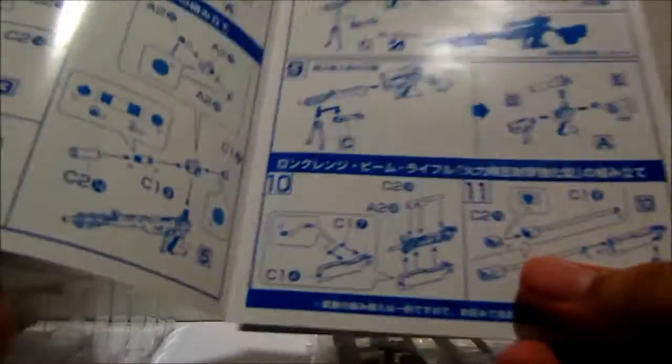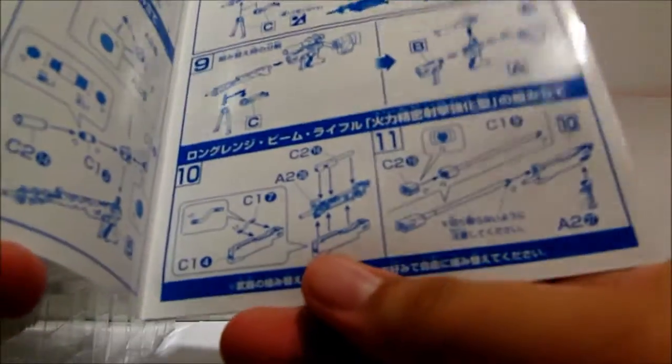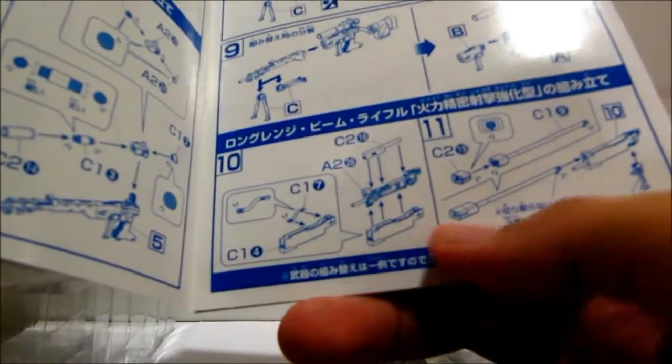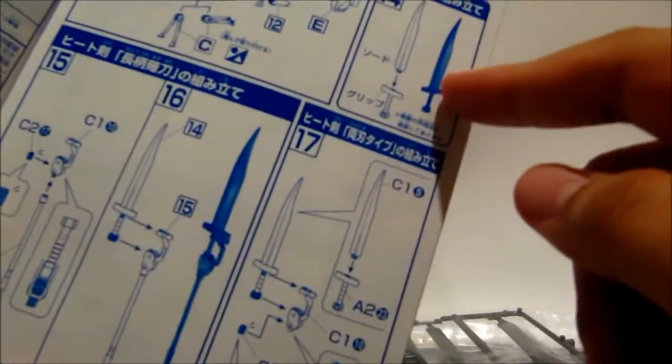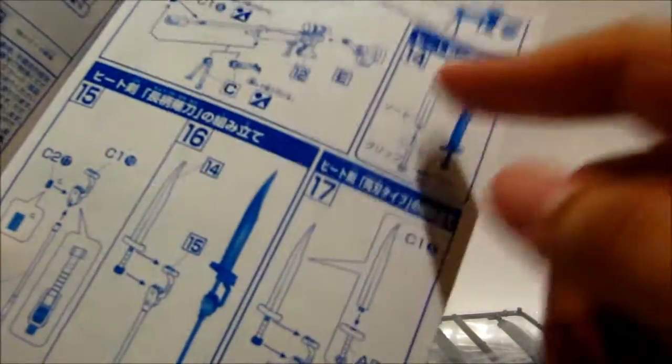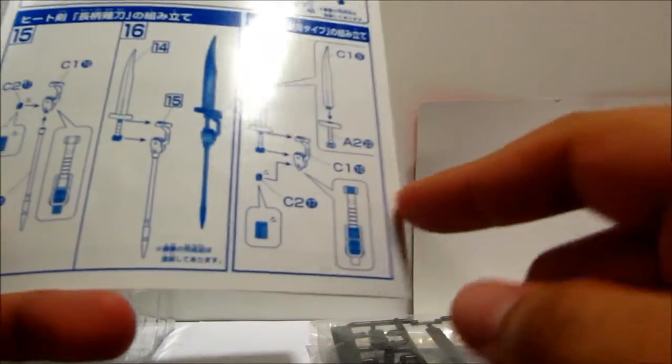And of course, right here in the bottom, it starts off with the other parts. This is the Beam Rifle stuff. And of course, it tells you how to start off with putting together the Heat Sword here, the different staff options you can do.